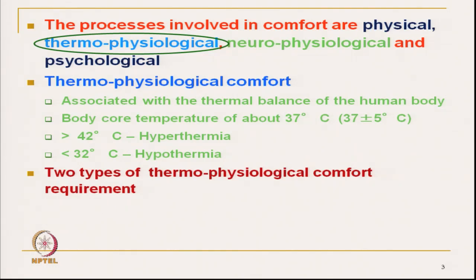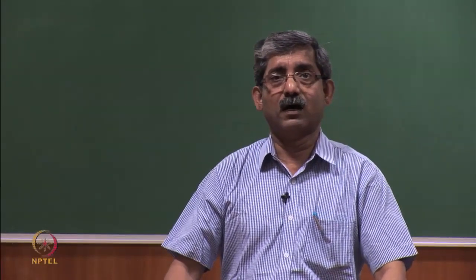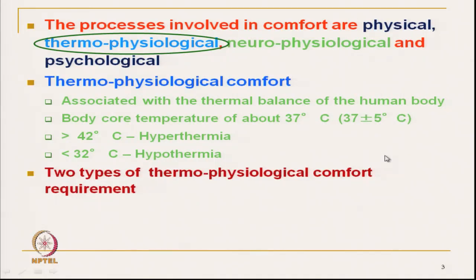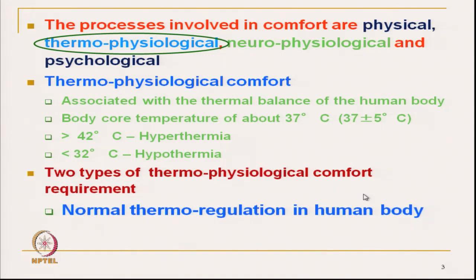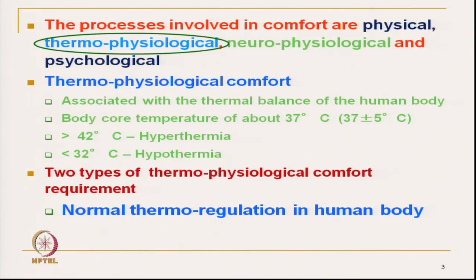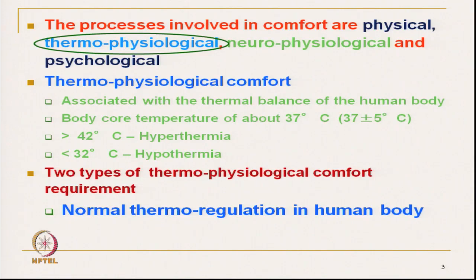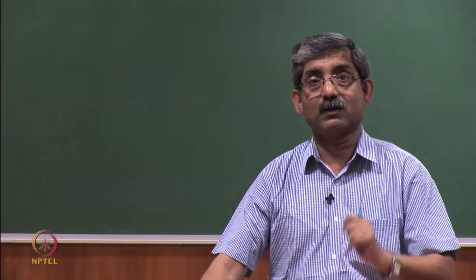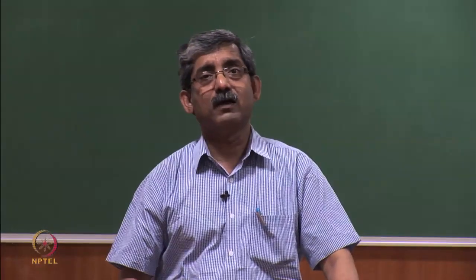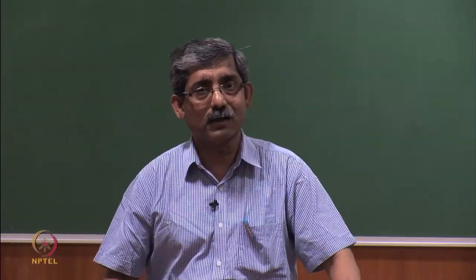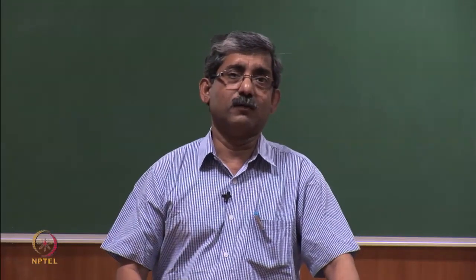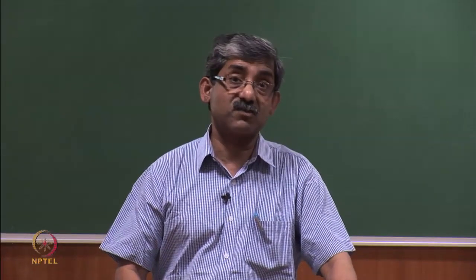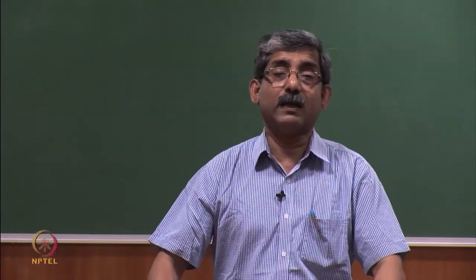Our physiological activities always try to maintain body core temperature at 37°C, but our clothing has to assist that. There are two types of thermophysiological comfort requirements. One is normal — normal thermoregulation in the human body, dealing with normal environmental temperatures. The second is thermal distress, where temperature is extreme — either extreme heat or extreme cold. In normal conditions, physiological processes can take care of thermoregulation, but in thermal distress, clothing must come into the picture.